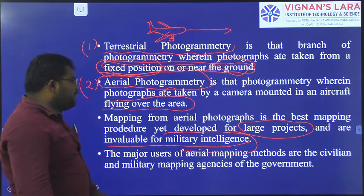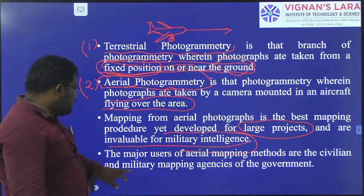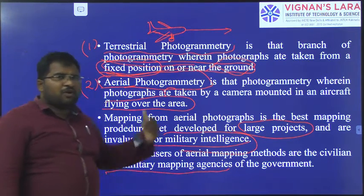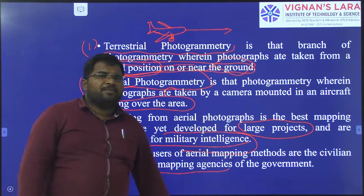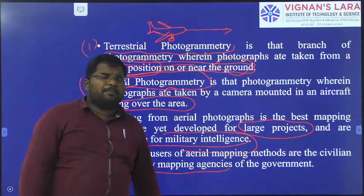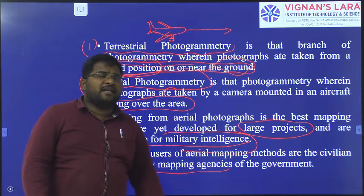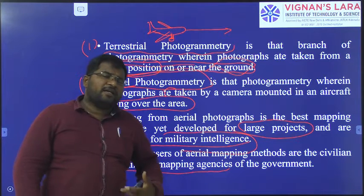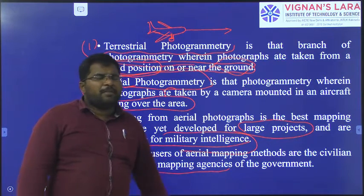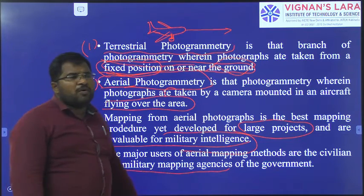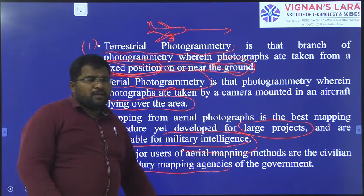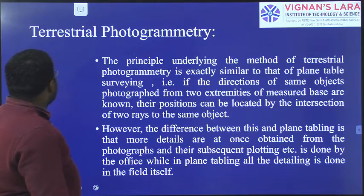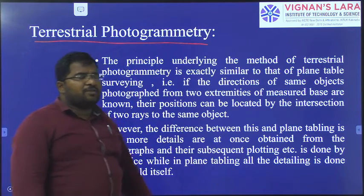The major users of aerial mapping methods are civilian and military mapping agencies of the government and army. For example, government agencies use it to find different crop types, soil types, and rock types across a state or country. Army personnel use it to monitor areas where other countries' military may be positioned.